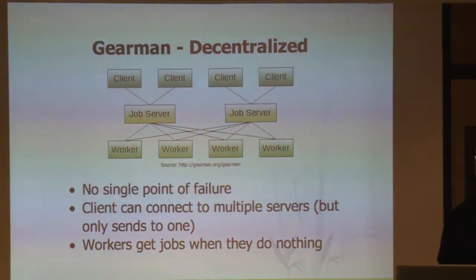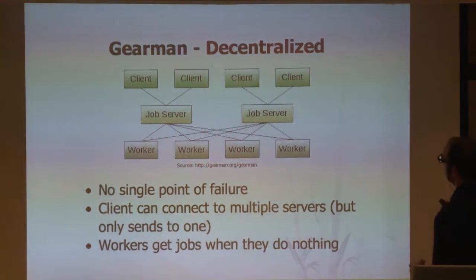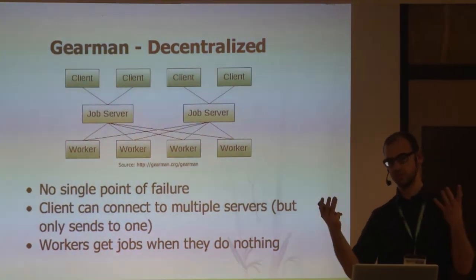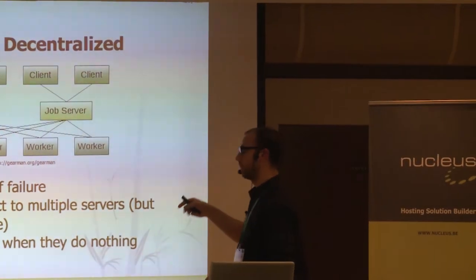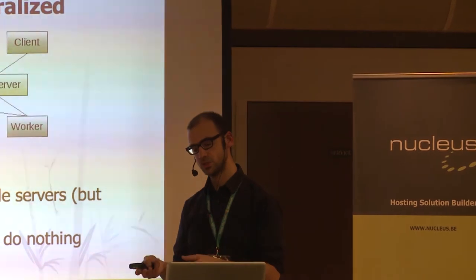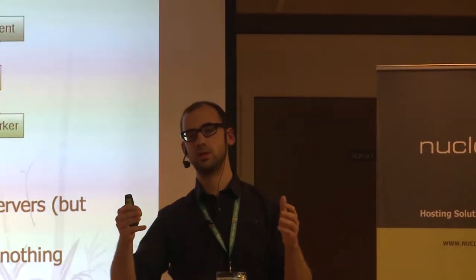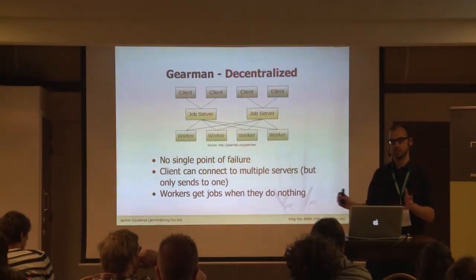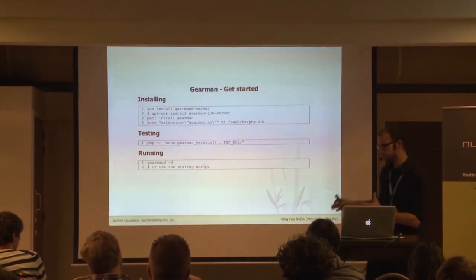Here's an example without a single point of failure — you just put multiple job servers in your network. The clients only connect to one, and the workers connect to all job servers. Each job server has its own queue. Workers start and register themselves to all job servers. Clients have a connection string with multiple servers but always connect to the first one — if that's down, they use the second, then the third. But they only send to one server to avoid overlapping jobs. If a worker is busy, the other job server knows and leaves it alone.